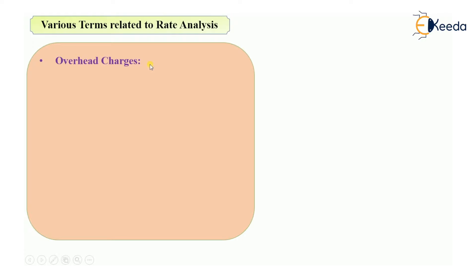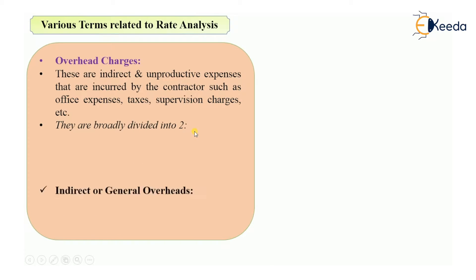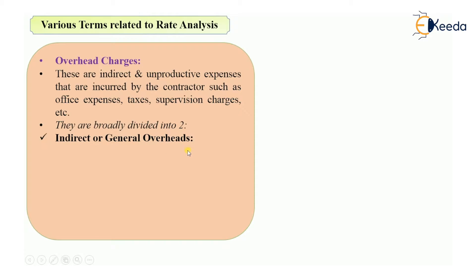The first term is overhead charges. These are indirect or unproductive expenses incurred by the contractor, such as office expenses, taxes, supervision charges, etc. They are not related to the actual item of work. Overhead charges are broadly divided into two categories: first, indirect or general overheads, and second, direct or job overheads.